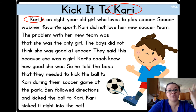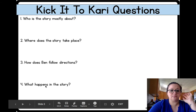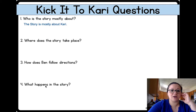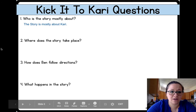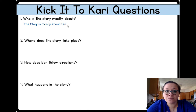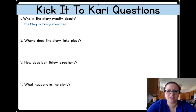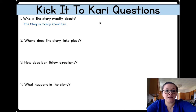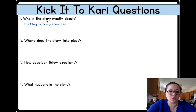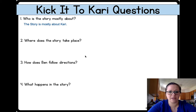Obviously the answer to number one has to be Kari. So let's go to that slide and plug that in. The story is mostly about Kari. Look at my sentence — it says the story is mostly about Kari, period. I wrote a complete sentence. You should write a complete sentence. Capital at the beginning, period at the end. And I took most of my words from either the question or my reading. I can spell Kari because the title's right here. The story is mostly about — that's in the question. So I wrote: the story is mostly about Kari. Easy, it's all right here for us.